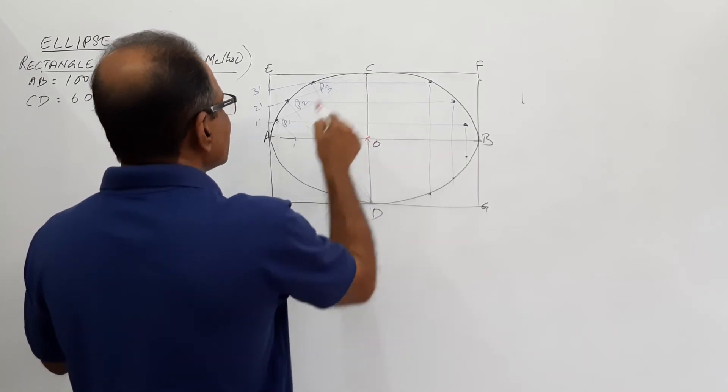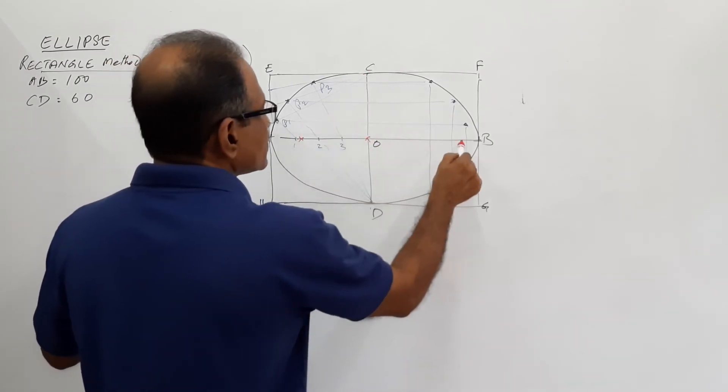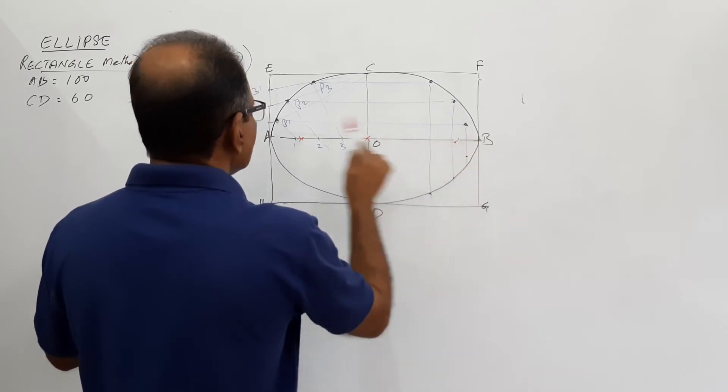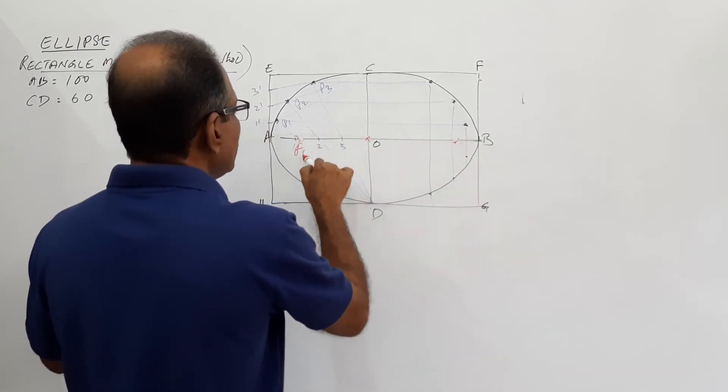Erase it and correct. Now you can find the foci if you want. How do you do that? Take A in your compass, see your center, cut arcs on major axis. You get F1 and F2.